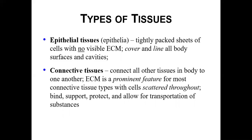The second main type is connective tissue. As the name implies, it connects cells and tissues together in the body. This tissue type has a lot of extracellular matrix — for example, bone tissue is a type of connective tissue, and its extracellular matrix provides the density for your bones. Connective tissues help to bind tissues together, support, protect, and even allow for transportation of substances.